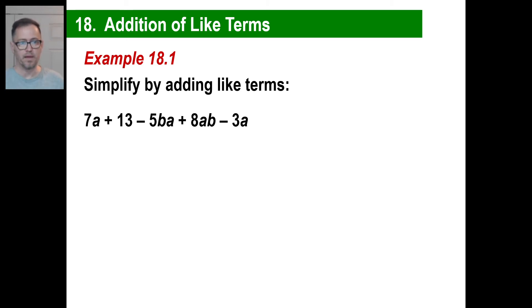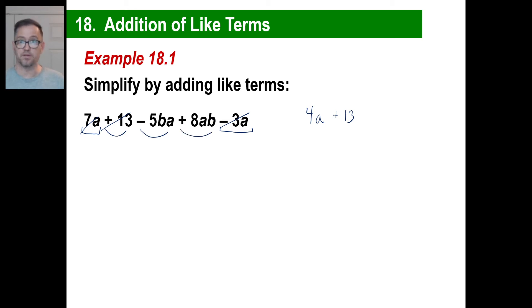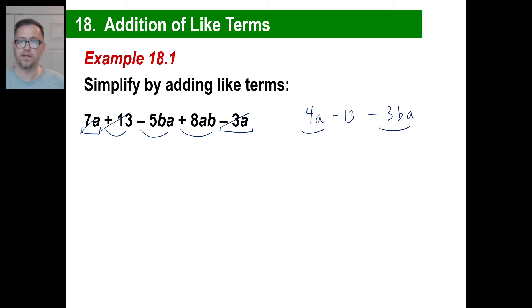Start at the left: 7a minus 3a gives 4a. There's a positive 13 — nothing else to add it to, so just plus 13. Then there's a negative 5ba and a positive 8ab, which is the same thing as ba. So 8 of something minus 5 of something gives us 3ab. You can't add 3ab and 4a because they're not like terms — this has a b and an a, that has just an a. We're done.